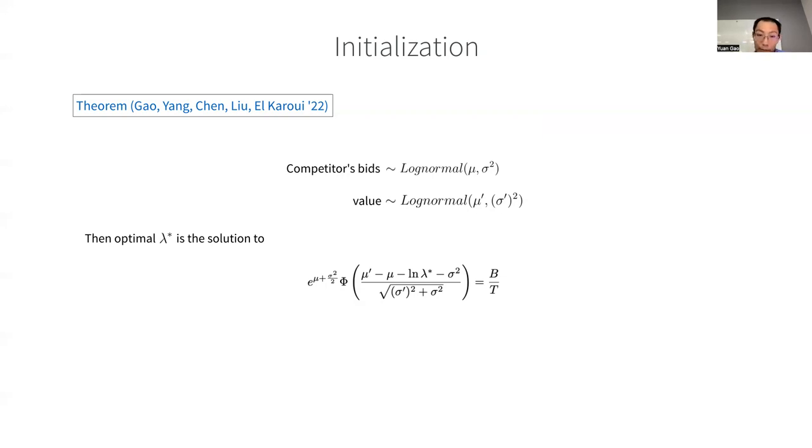In this paper, we give an explicit formula for the bid initialization problem in second price auctions, given estimation of the competitor's bid distribution and the value distribution of the ad. And connecting to the last slide, remember the personalized normalization factor we talked about for lambda. This is exactly what we use as the normalization factor, and it enjoys a lot of the favorable convergence guarantees.